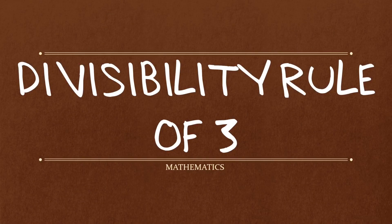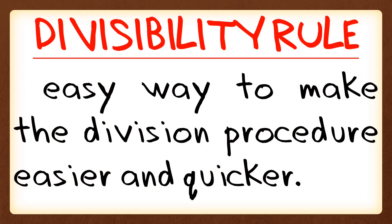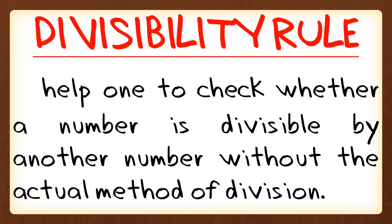In this video, we're going to learn about the divisibility rule of 3. A divisibility rule is an easy way to make the division procedure easier and quicker. It helps one to check whether a number is divisible by another number without the actual method of division.